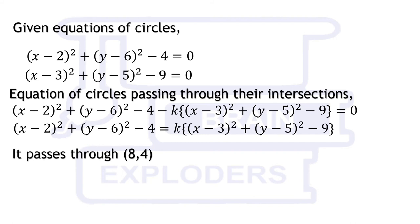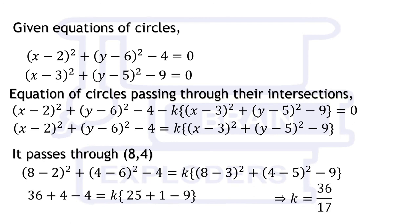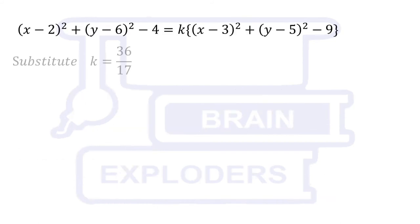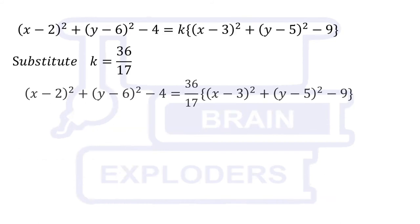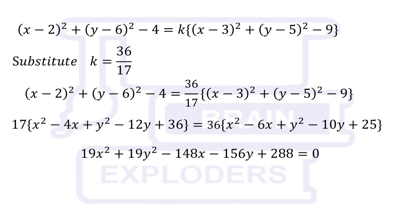It passes through (8,4), so the value of k can be calculated by substituting x = 8 and y = 4. After that, on substituting the value of k in the third obtained equation, we get the required equation of the circle.